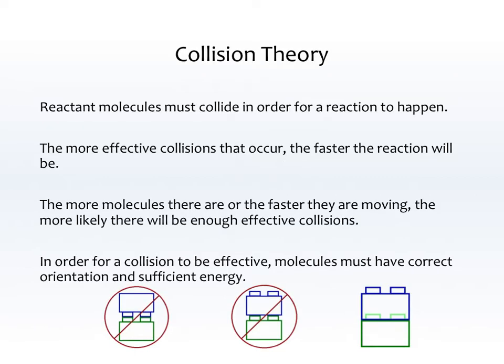So first of all, a reaction occurs — one theory of why a reaction occurs is collision theory, which says that reactant molecules must collide or hit each other in order for a reaction to happen. It's not good enough to have two reactants in two separate beakers; you actually have to put them in the same beaker so that they hit each other and react. The more effective collisions that occur, the faster the reaction will be. So more collisions means faster reaction.